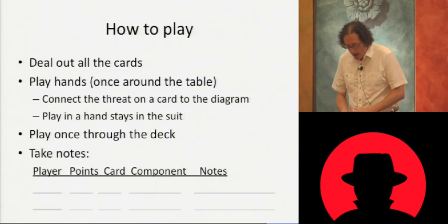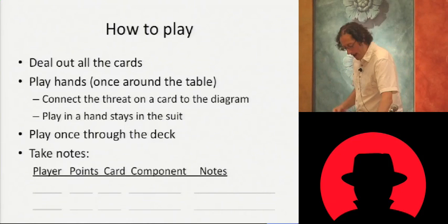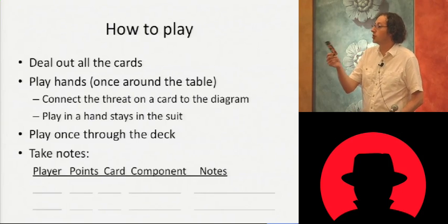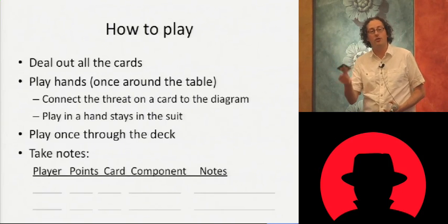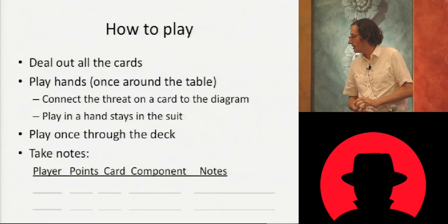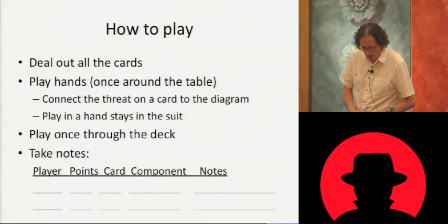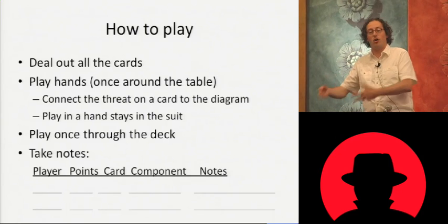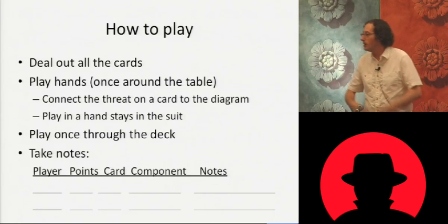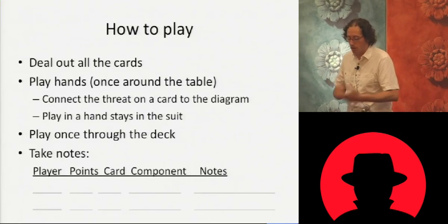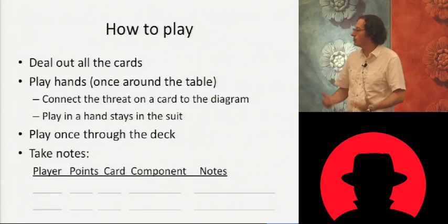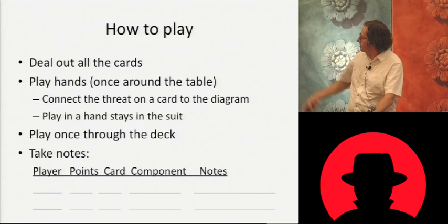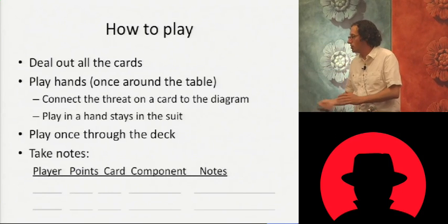For example, the Queen of Repudiation says: an attacker can say 'I didn't do that' and you'd have no way to prove them wrong. The way you play is you connect that threat to the diagram — you say 'aha, there are no logs that show the transactions that take place.' You give people a point for playing that card, you stay in the suit that was led, and you play through the deck. As you go, you take notes on who found the threat and what it applies to.